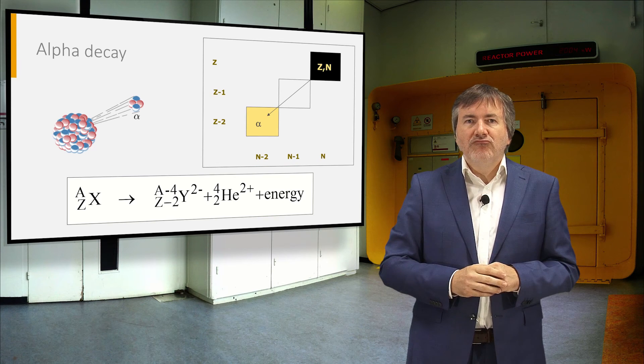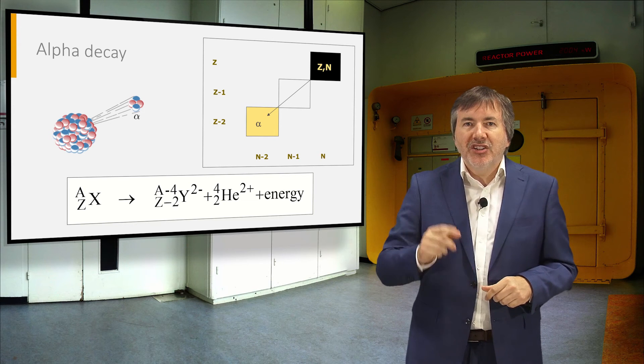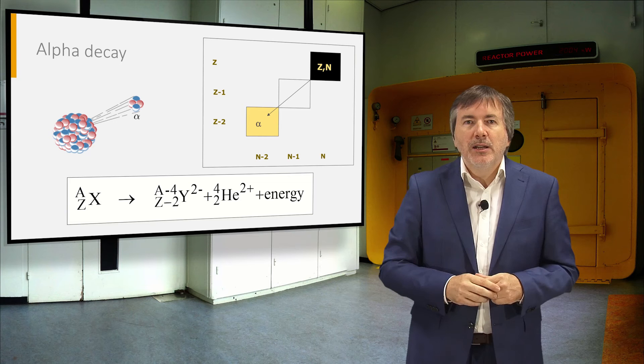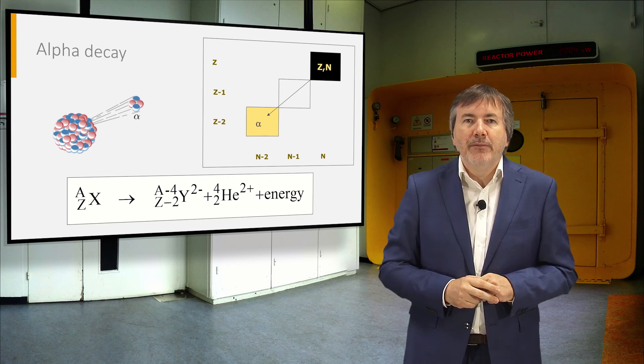Alpha decay is a sport played by the heavyweight class of nuclides. Excessive mass is lost by emission of a helium nucleus with a kinetic energy of 4 to 8 MeV.